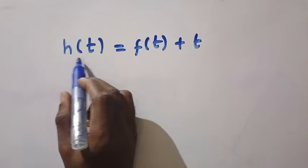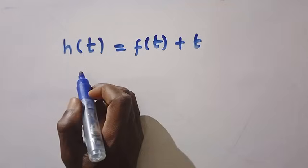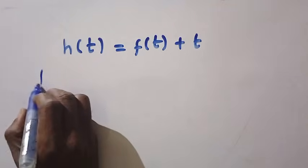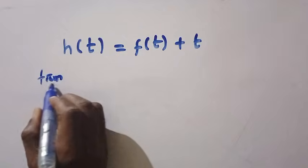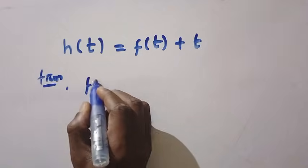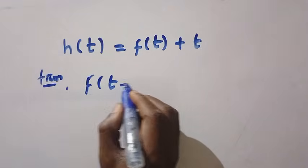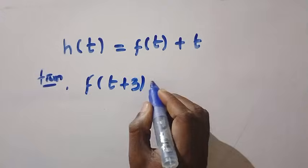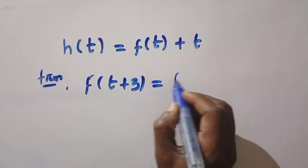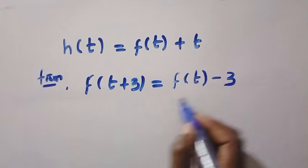So, if h is the periodic function. And if you recall from the equation we derive, which is f of t plus 3, which gives us f of t minus 3.